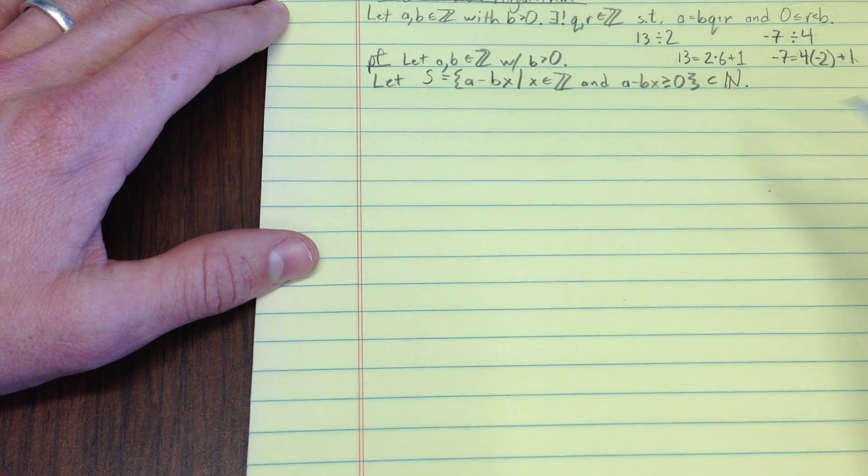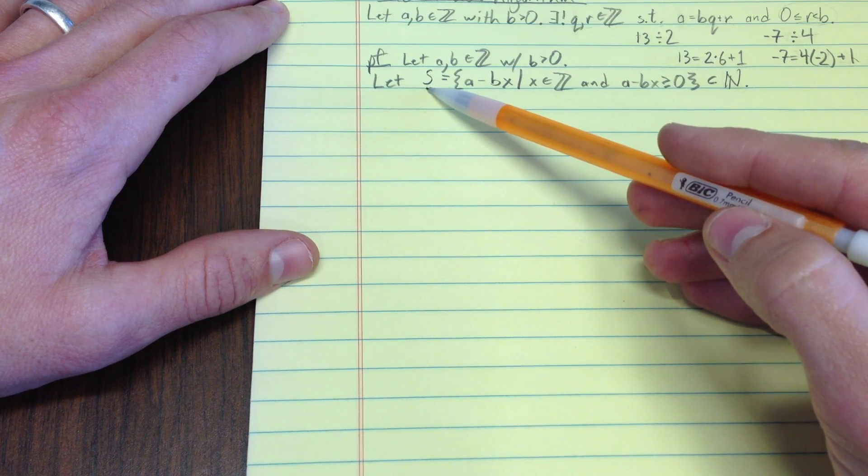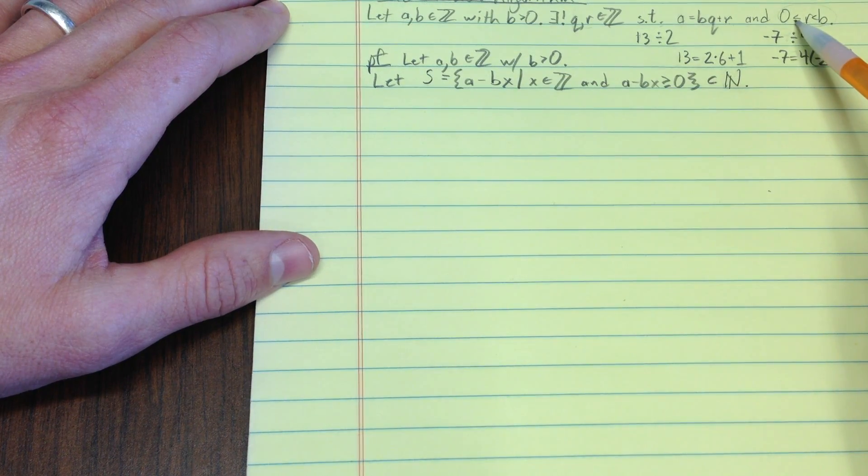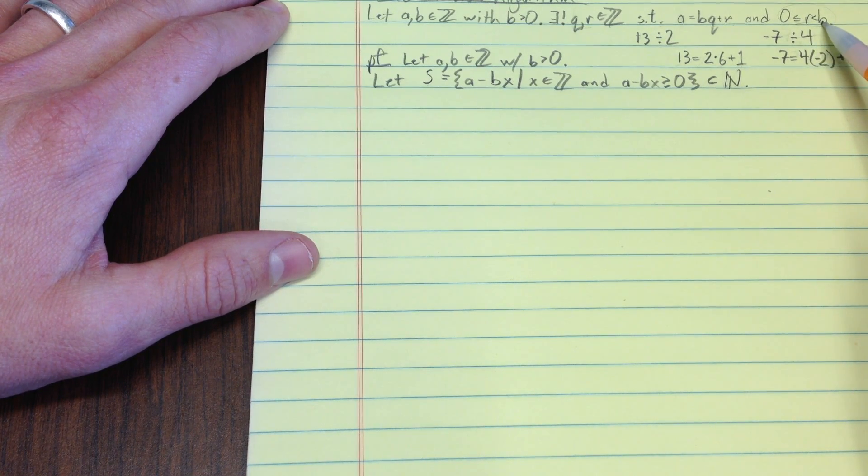So, here's going to be my technique. My technique is going to be show s is not empty, apply the well-ordering axiom. Well, that gives me for free this inequality here. Step two, show that r is indeed less than b.